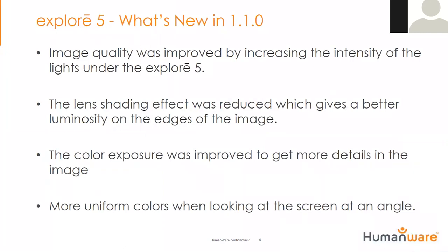What's new in version 1.1.0? We have worked a lot on image quality for the Explorer 5. The first thing we did is we increased the intensity of the lights on the Explorer 5 and noticed better image quality. We also reduced the effect of lens shading, meaning there's going to be better luminosity on the edges of the image. We improved the color exposure to get more details on the image, and we now have more uniform colors when looking at the screen at an angle. This is for Explorer 5.